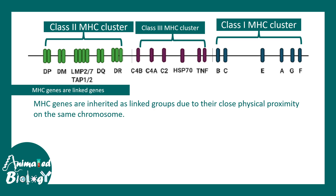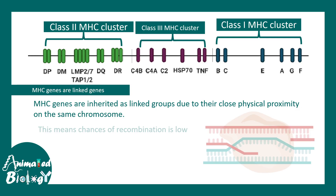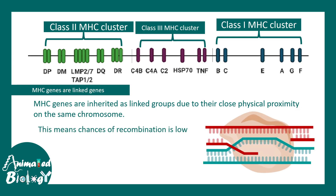MHC genes are inherited as linked genes, meaning these genes on the chromosome are physically located quite close to each other. Due to this physical proximity, recombination is literally not possible — the probability is super low — and that is why they are segregated as a unit. The question then is: how is MHC diversity achieved if recombination is not happening? MHC diversity is really important because in the world there are diverse sets of antigens that need to be presented to the immune system.